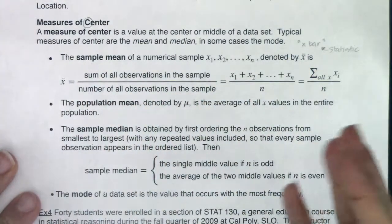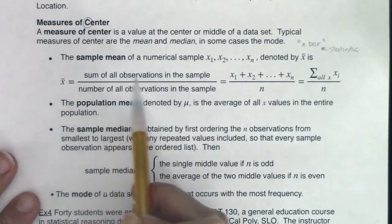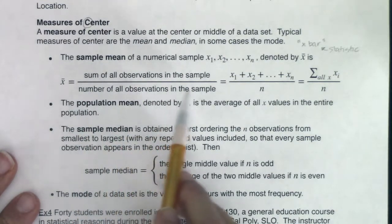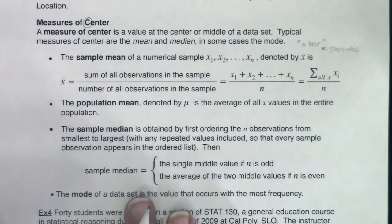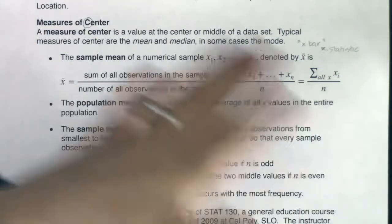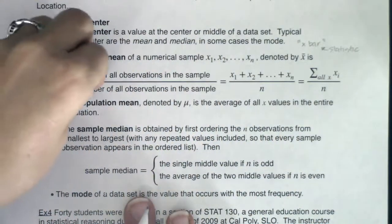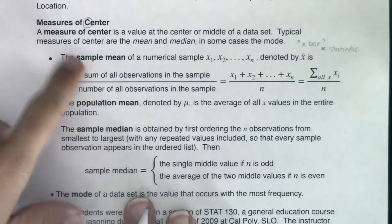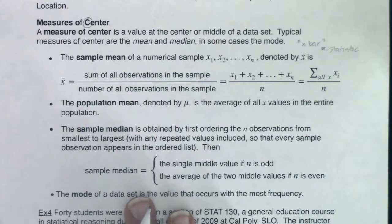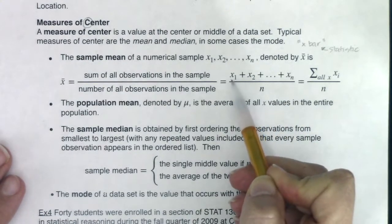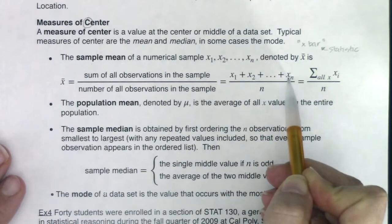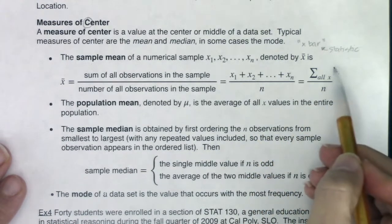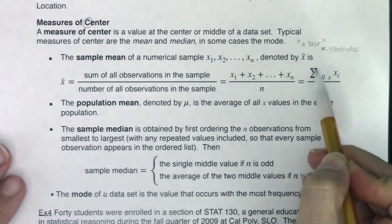Here's how we get a mean — you've probably calculated an average at some point in your life. You're going to add up all of the observations in your sample and divide by the number of observations in the sample. For example, if I have 30 students in a class, I add up everybody's score and divide by 30. In symbols, I take all my data values, add them together, and divide by n, the sample size. This is fancy math notation.